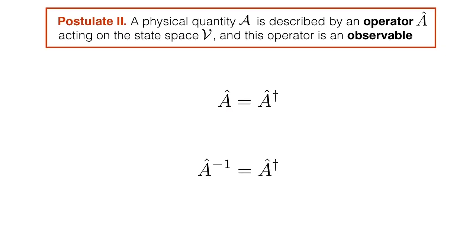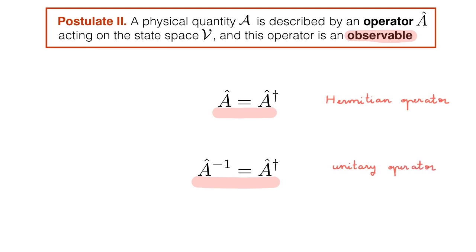Revisiting the second postulate of quantum mechanics: the operator associated with a physical quantity is called an observable. We are interested in a subset of operators called observables, which are defined as operators equal to their adjoint — these are called Hermitian operators and are essential in quantum mechanics. Another very important subset are unitary operators, whose inverse is equal to their adjoint. Links to videos on both Hermitian and unitary operators can be found in the description.